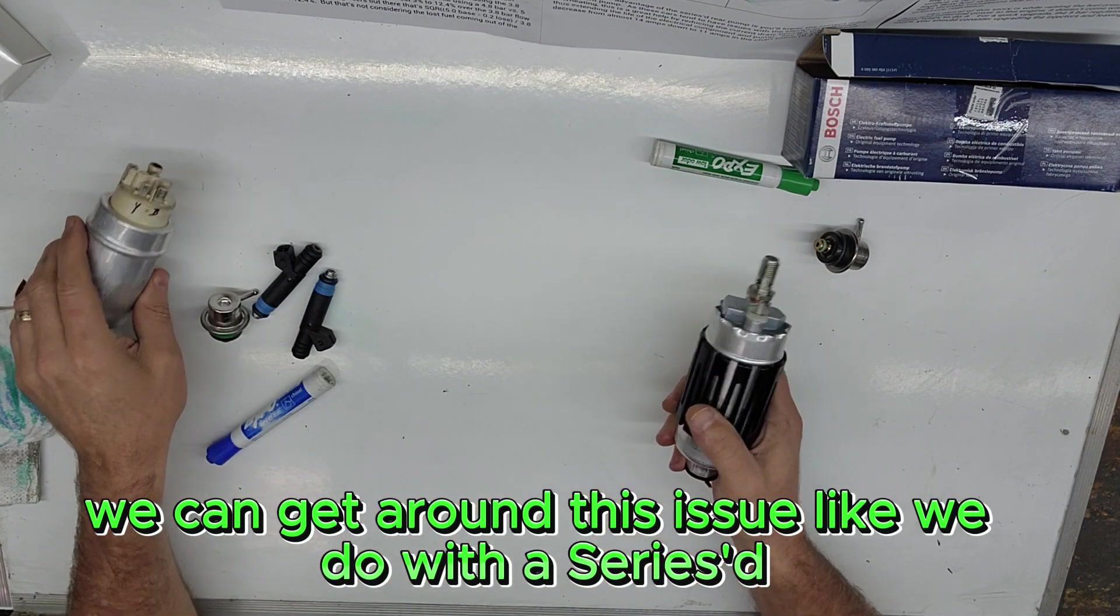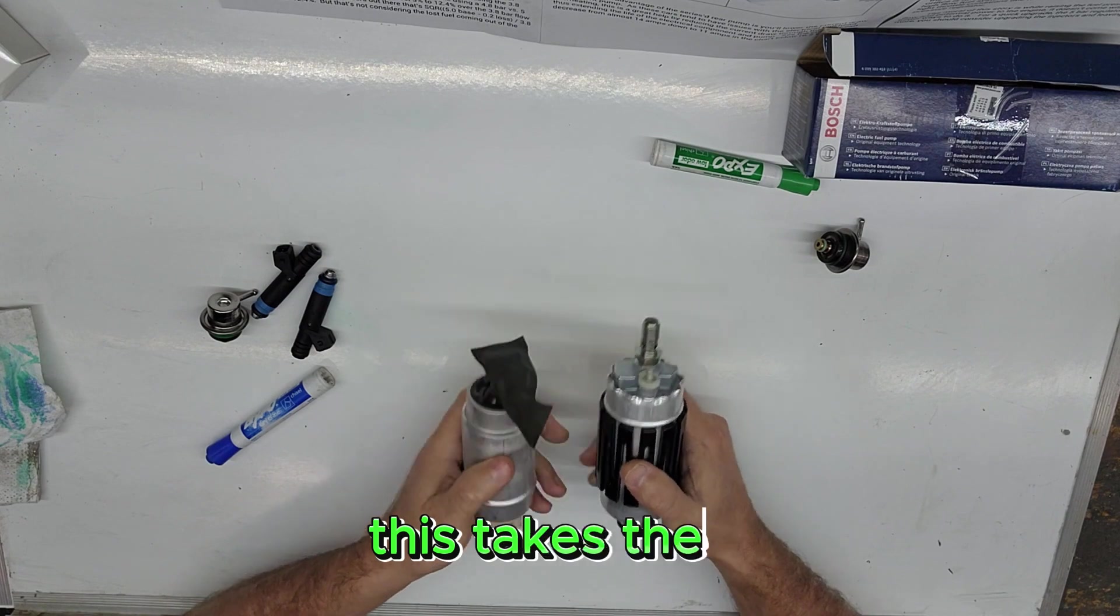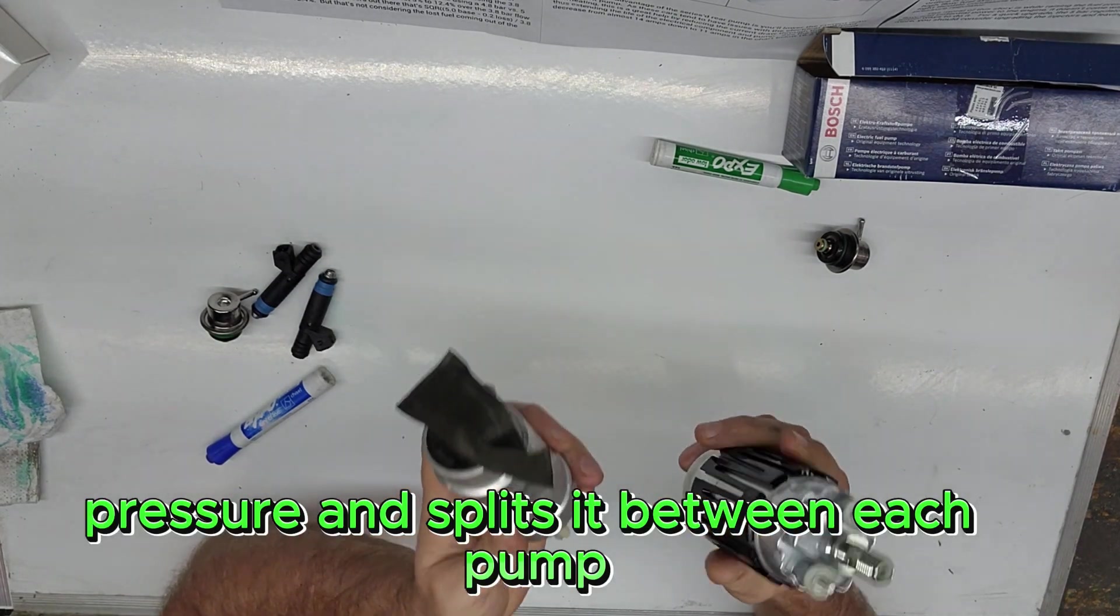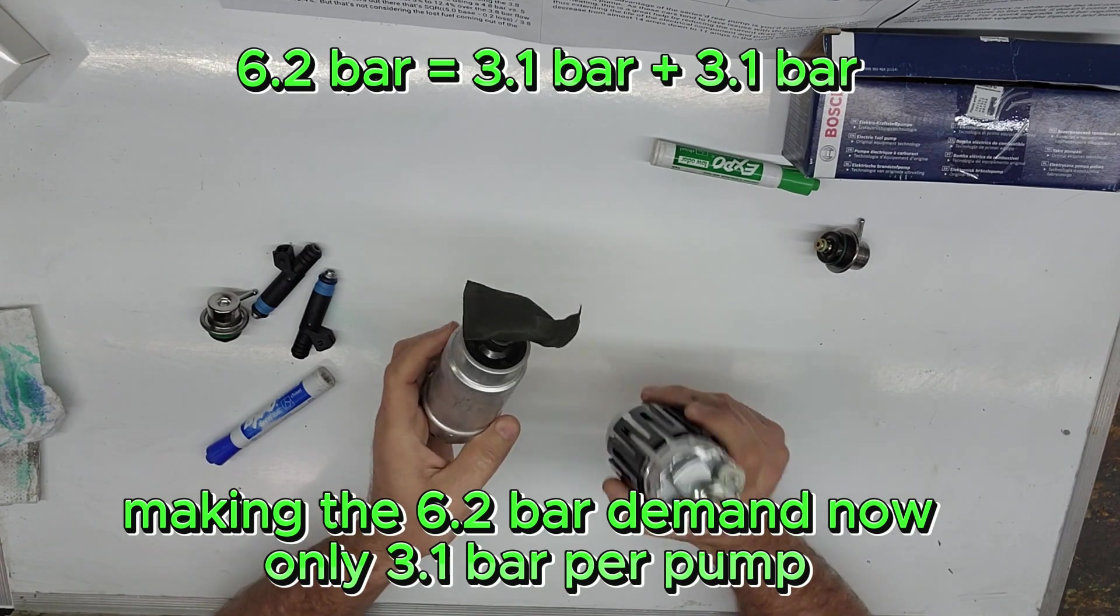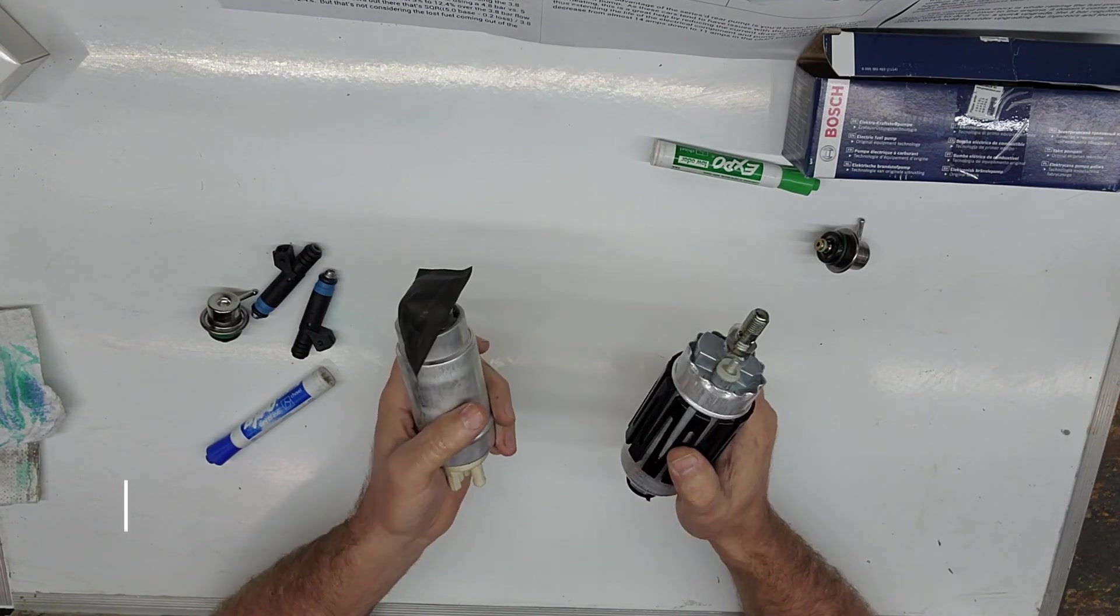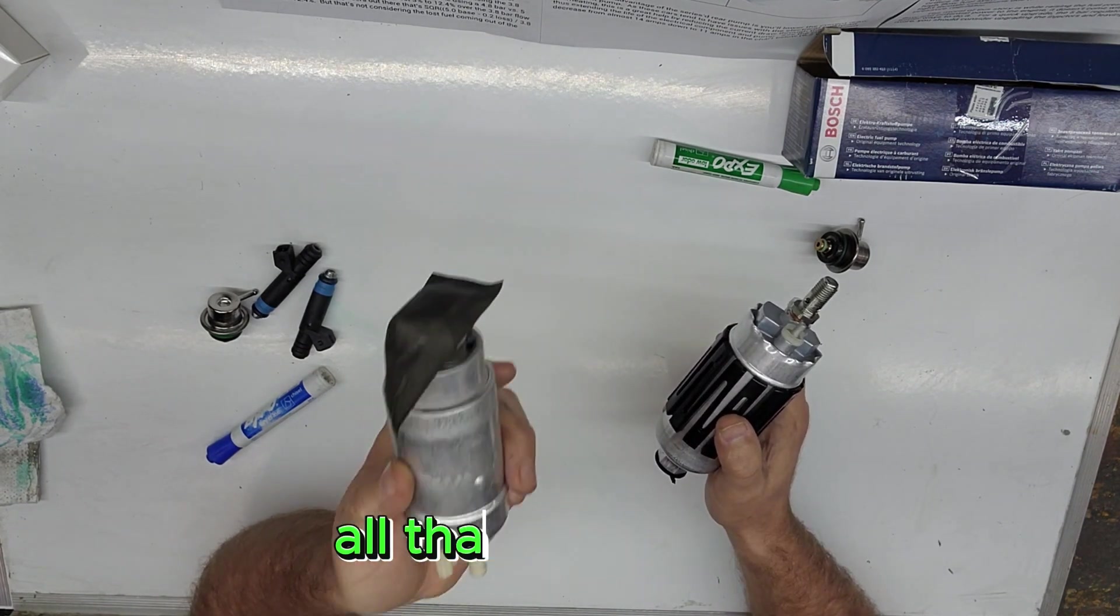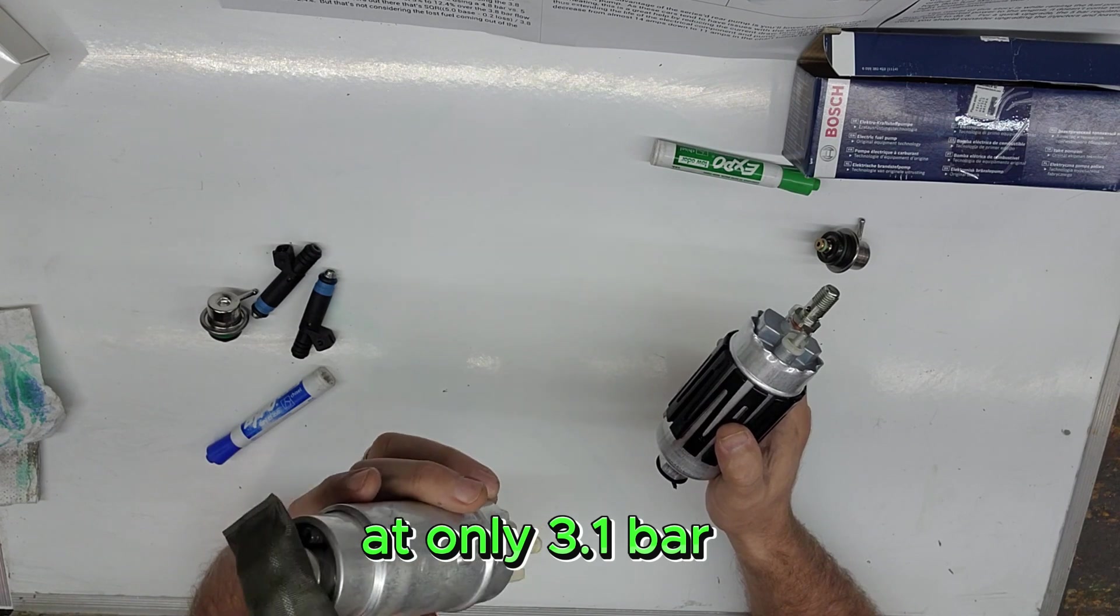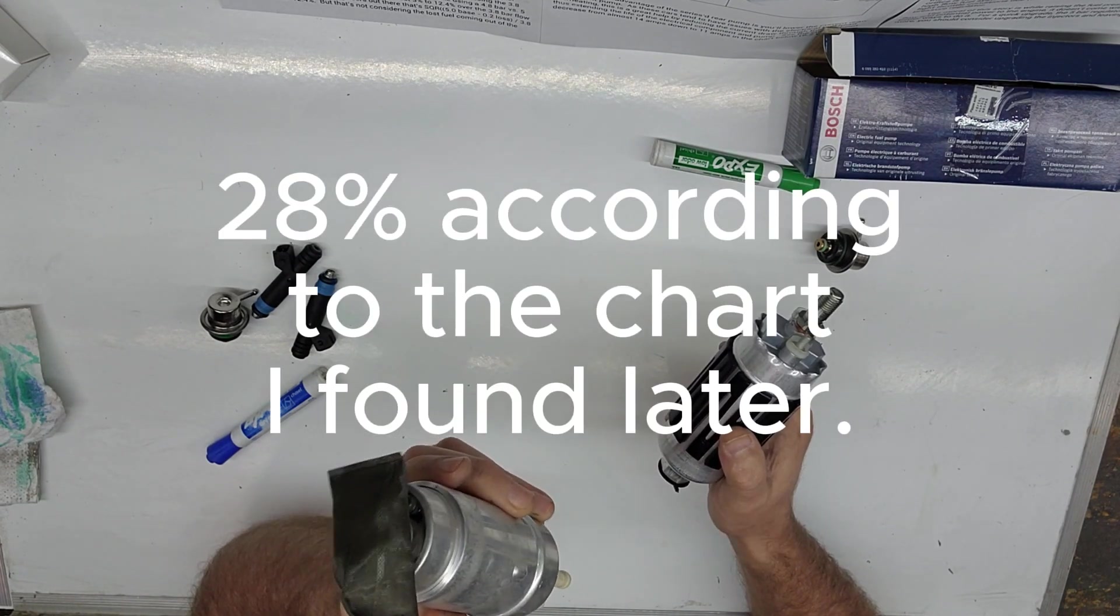We can get around this issue like we do with the series 044 pump in the engine bay. This takes the pressure and splits it between each pump, making the 6.2 bar demand now only 3.6 bar per pump. This also increases the flow of the OEM intake pump greatly, since it's no longer having to push all that pressure. At only 3.6 bar, it flows substantially more than it would at 6 bar, probably 30 to 40 percent.